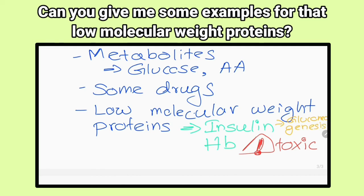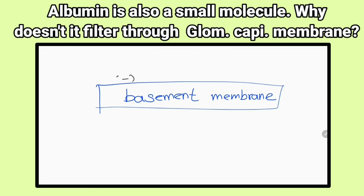Albumin is also a small molecule. Why doesn't it filter through the glomerular capillary membrane? Because the basement membrane contains negatively charged glycoproteins, so the negativity on them repels negatively charged albumin molecules.